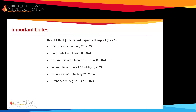Here are the important dates. The cycle opened on January 25th. All proposals are due by midnight on March 8th. The external review process runs from March 18th to April 6th, and internal review is from April 10th to the 8th. Grants are awarded and notifications sent by the end of May, and the grant period starts June 1st.